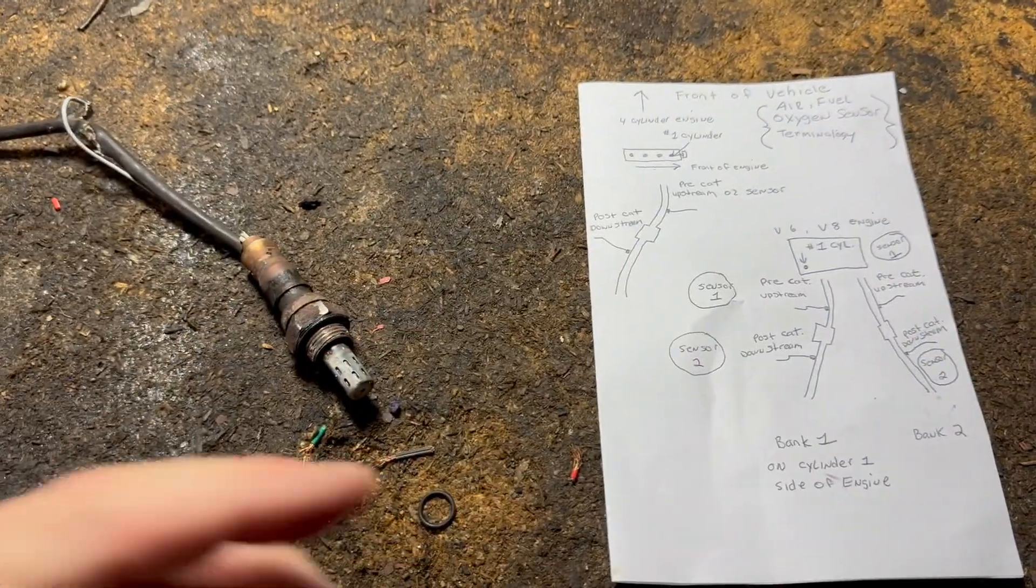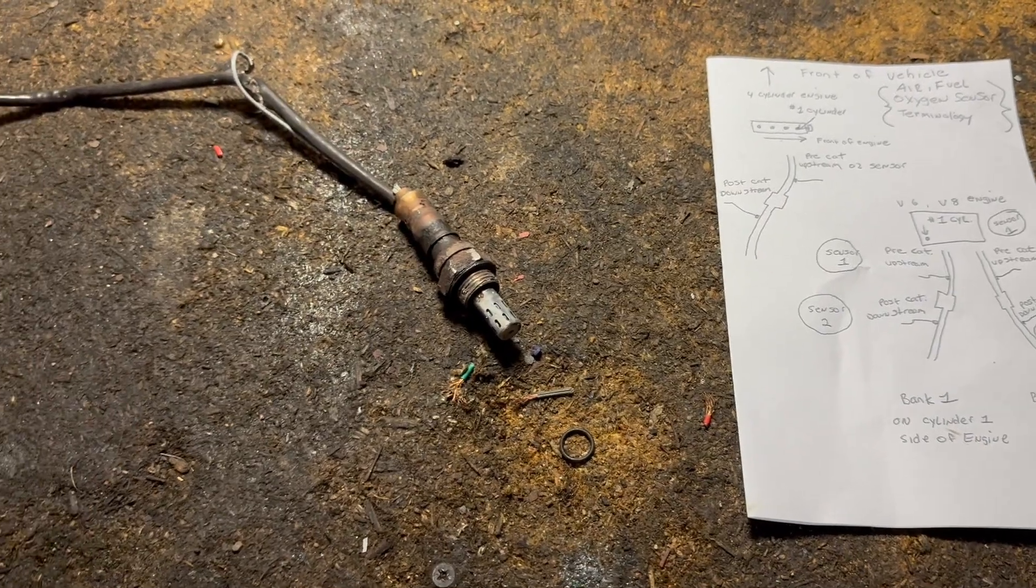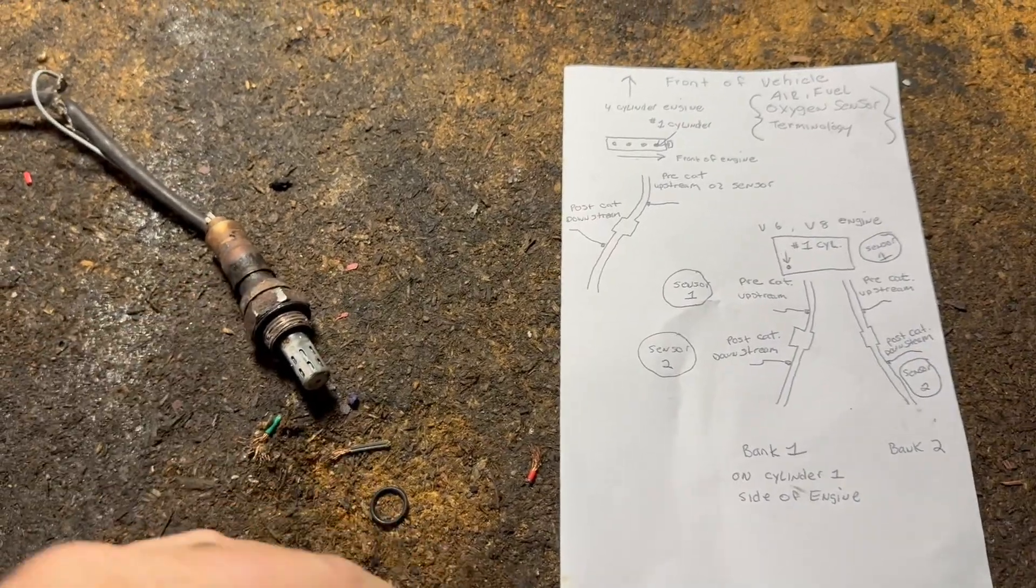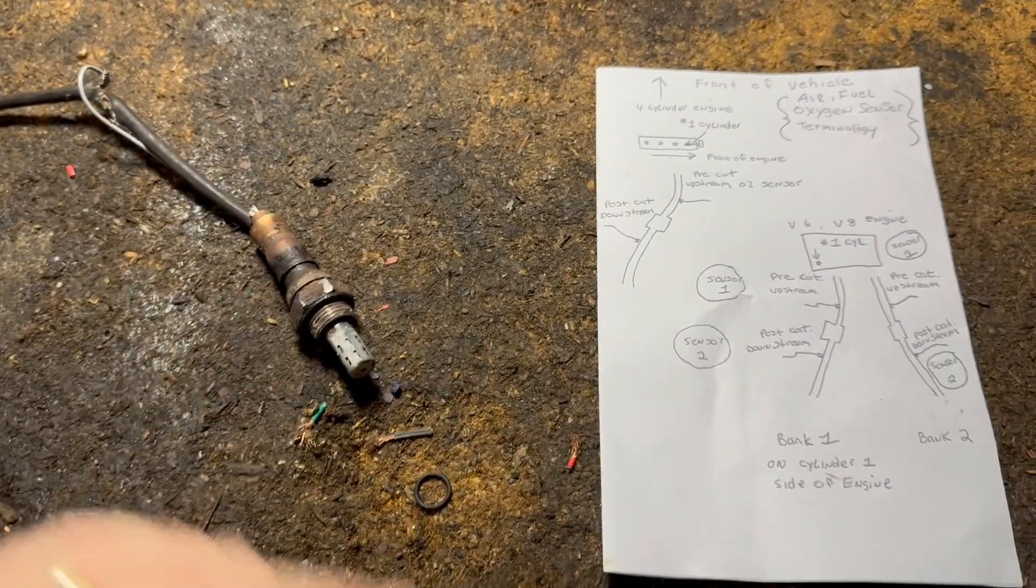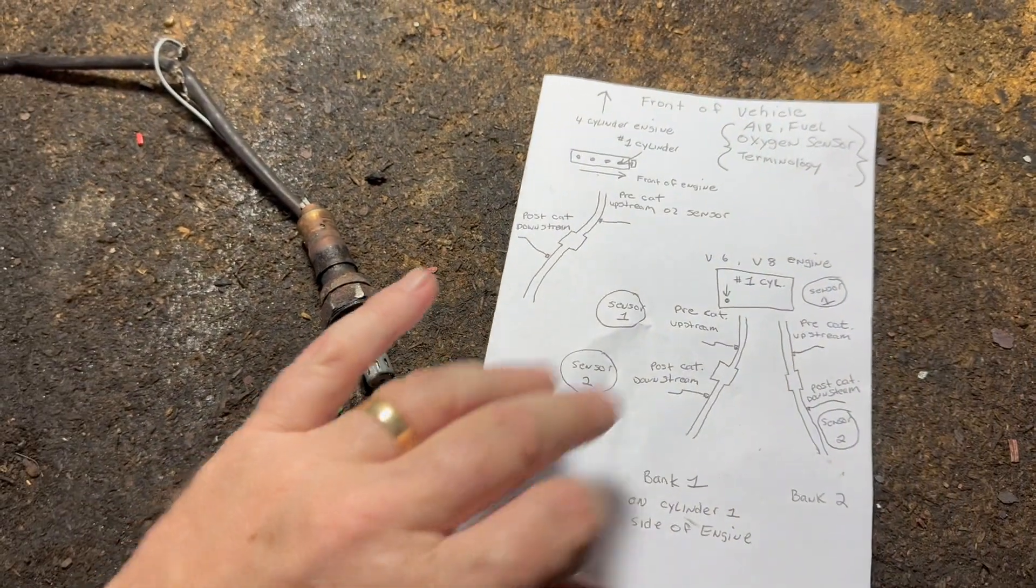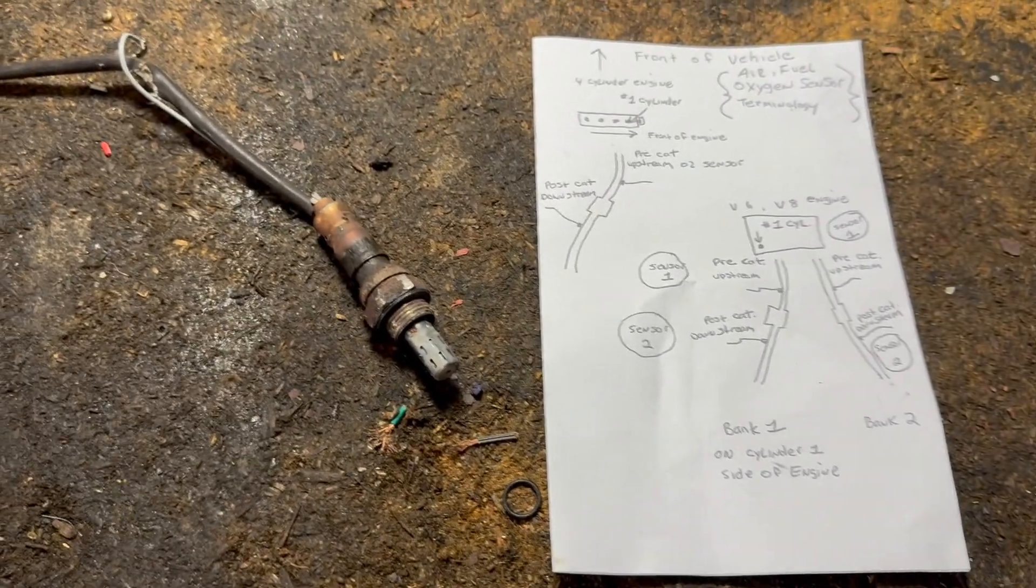There's a lot of terminology. What's bank one, post, upstream, downstream, pre? It's all confusing right? Bank right, bank left, bank A, bank B, what's going on? I'm gonna explain everything like I do in most of my videos in layman's terms so you can understand a lot easier.